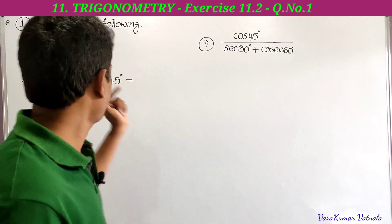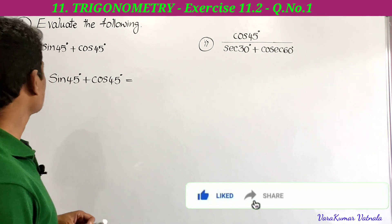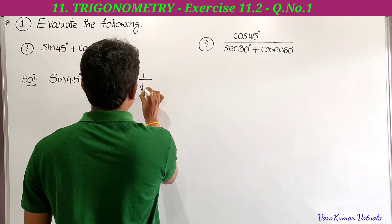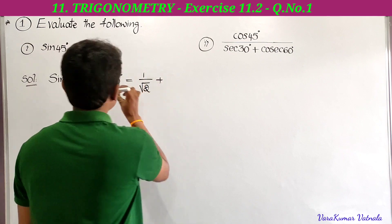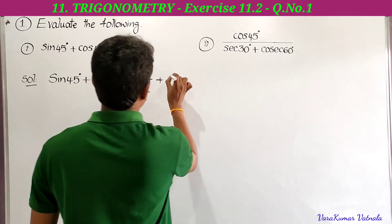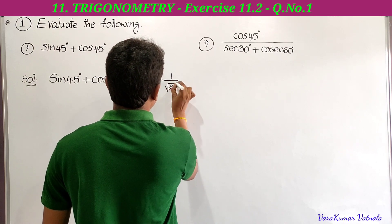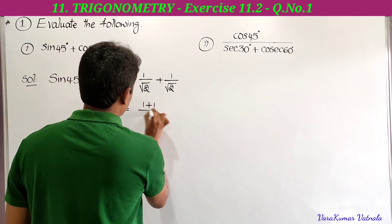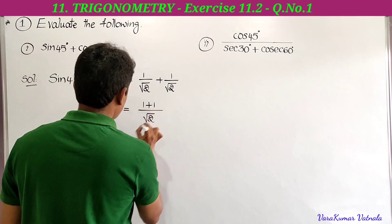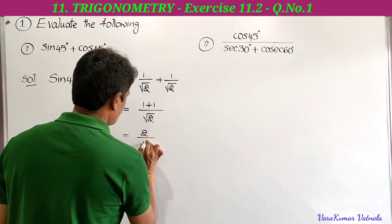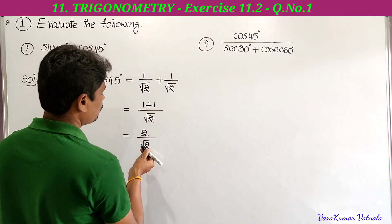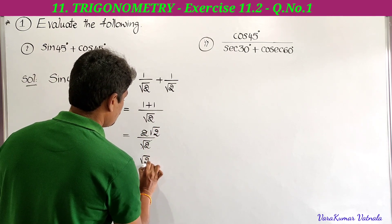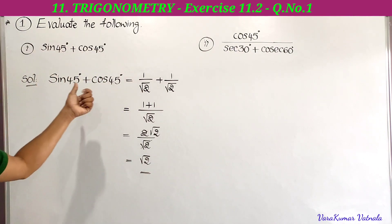For sin 45 degrees plus cos 45 degrees: sin 45 is equal to 1 by root 2, and cos 45 is also 1 by root 2. Since the denominators are the same, we add the numerators: 1 plus 1 by root 2, which gives 2 by root 2. Since 2 can be written as root 2 into root 2, one root 2 cancels, and we get root 2. So the value of sin 45 plus cos 45 is root 2.